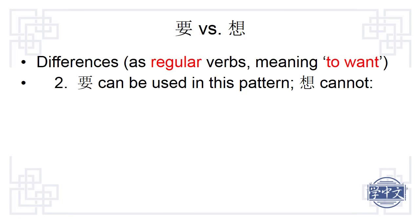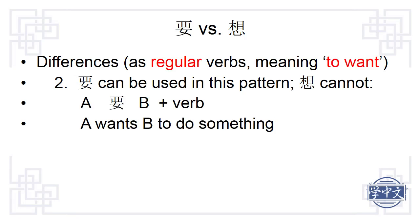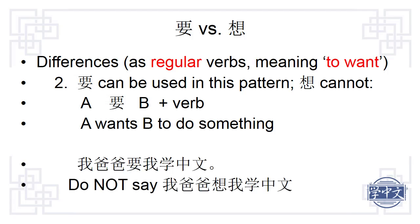要 can also be used in the pattern 'A wants B to do something,' but 想 cannot. For example: 我爸爸要我学中文 — My father wants me to study Chinese. You should not say 我爸爸想我学中文.